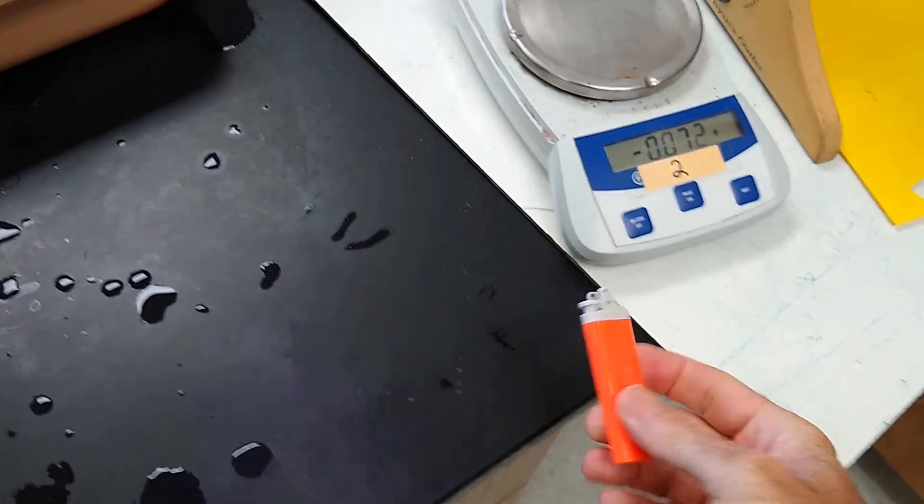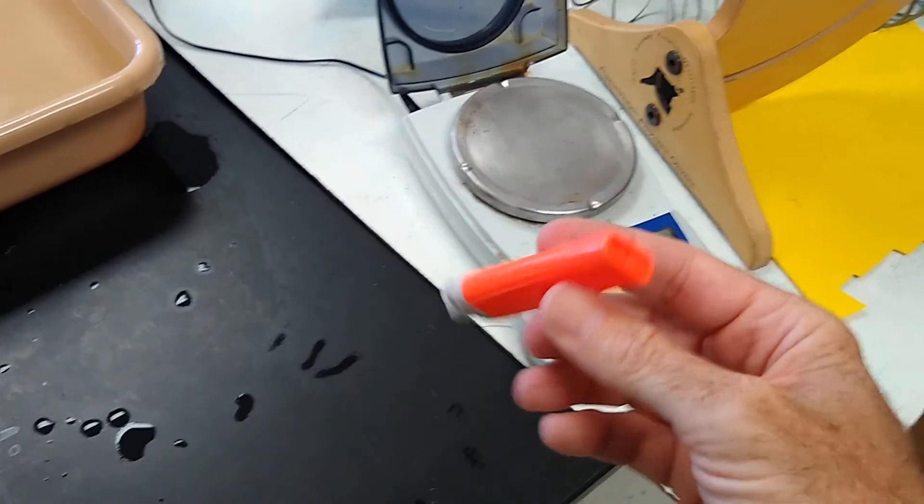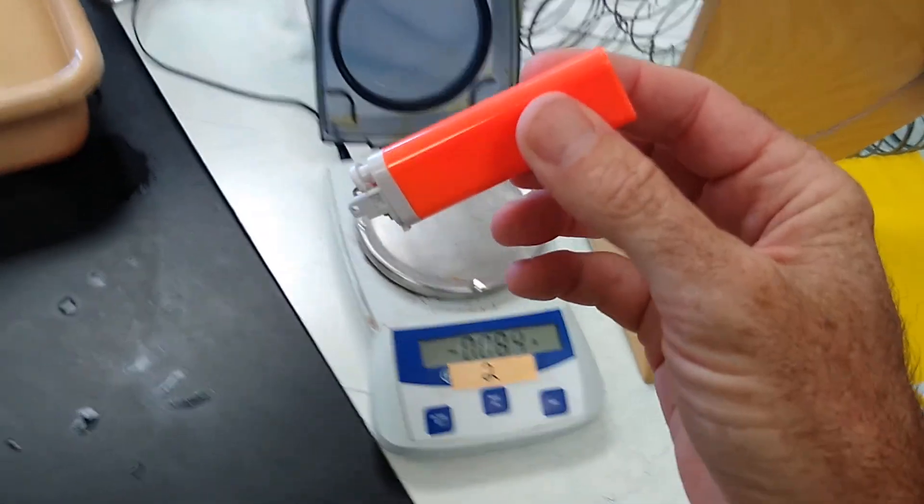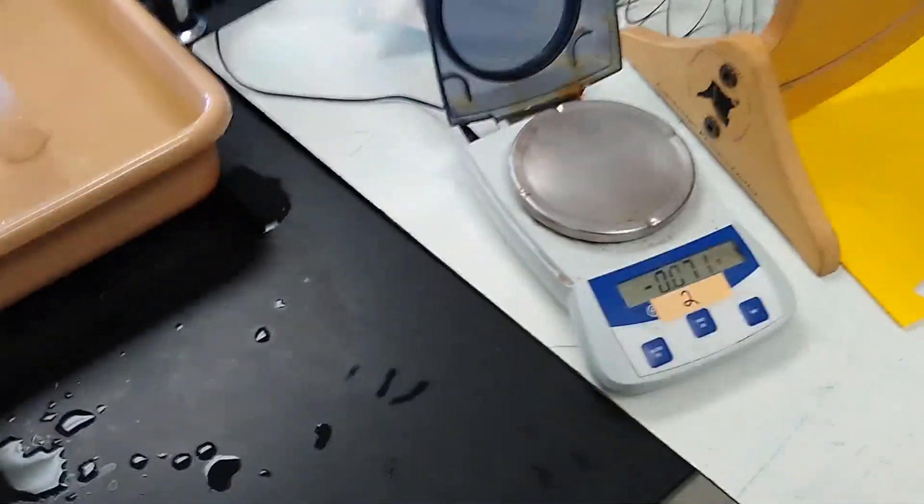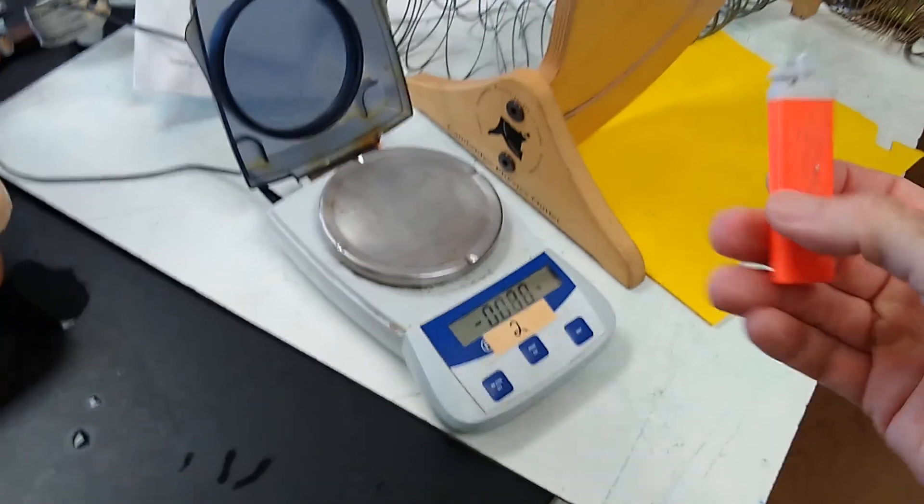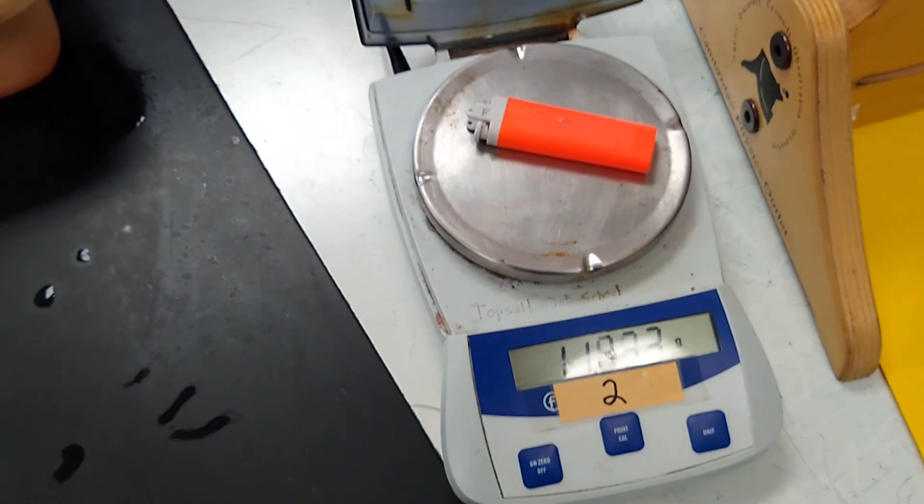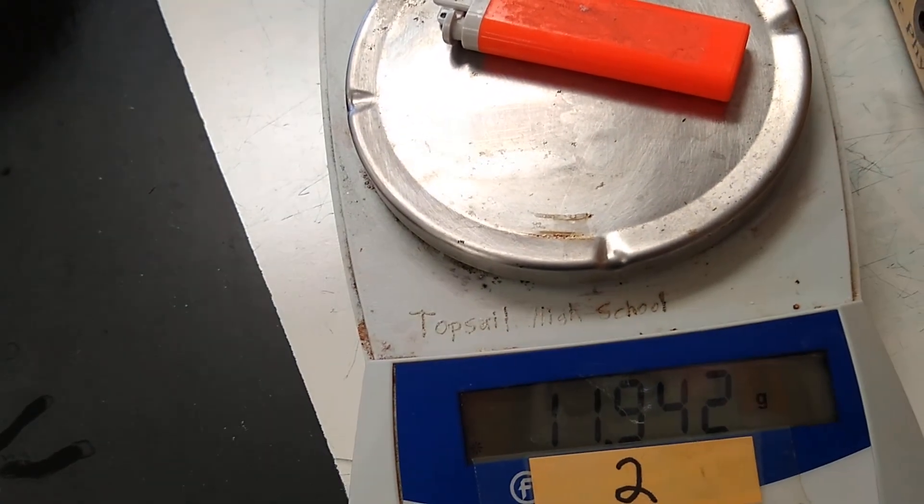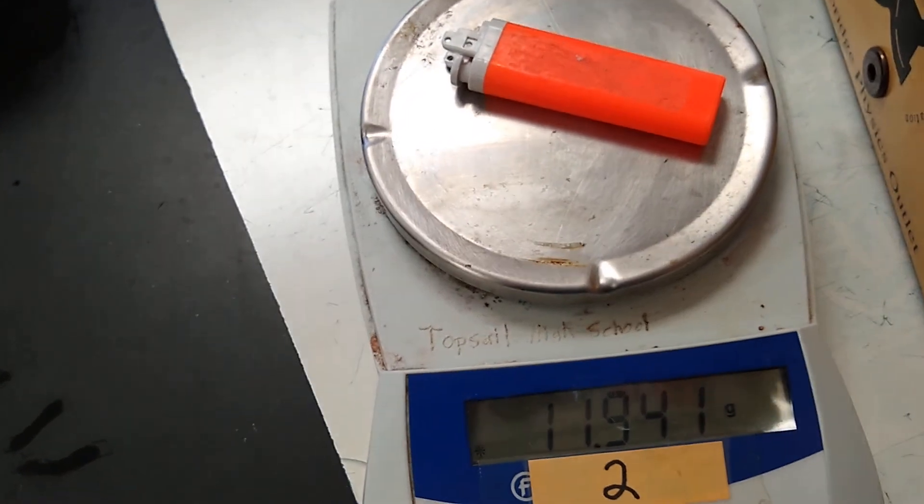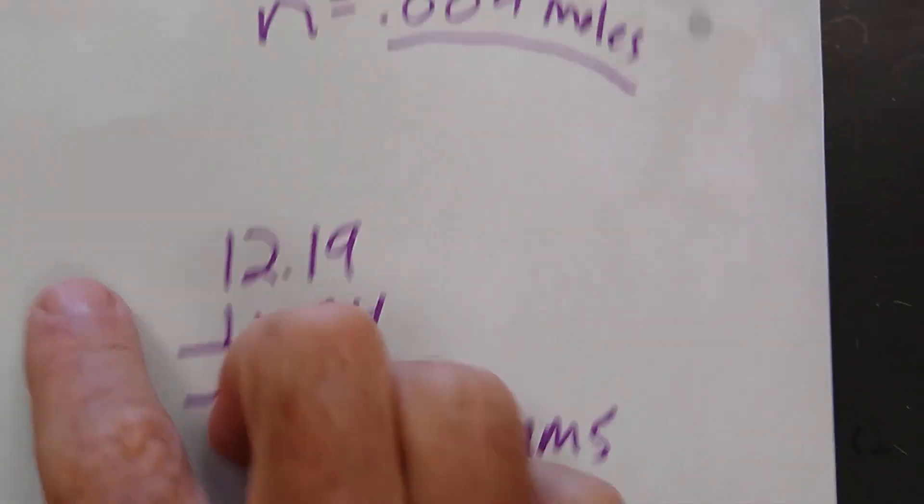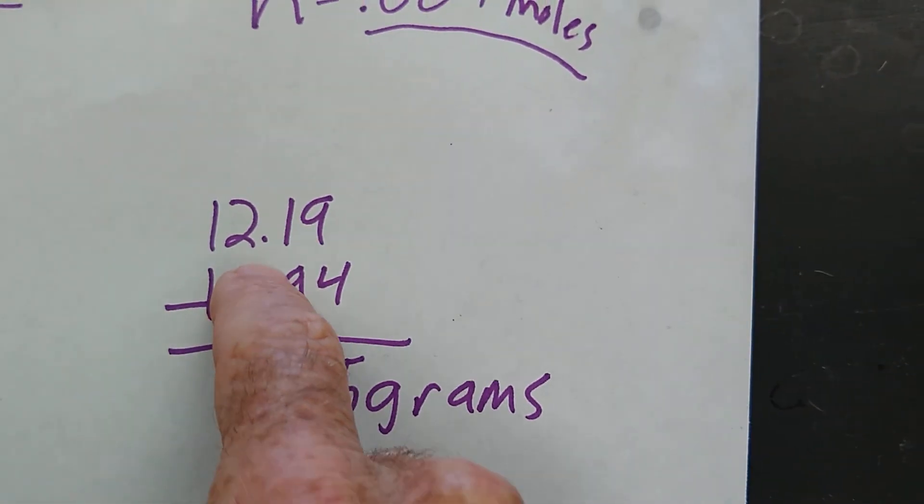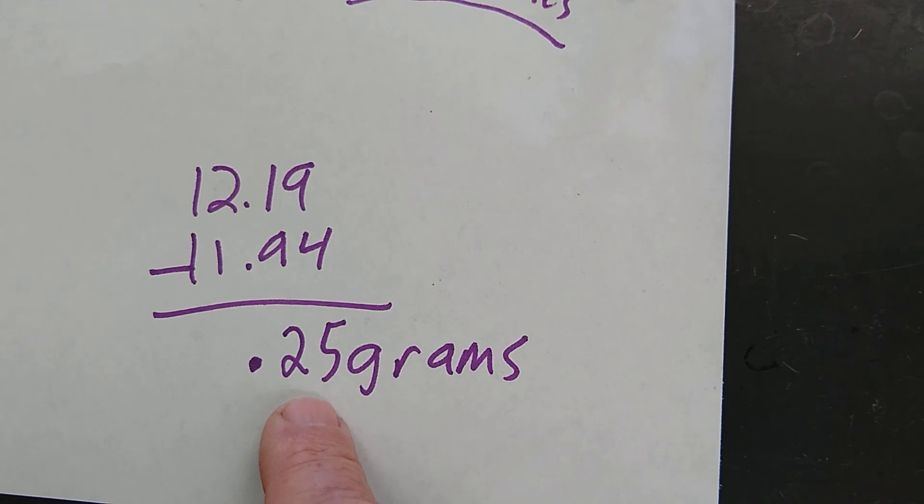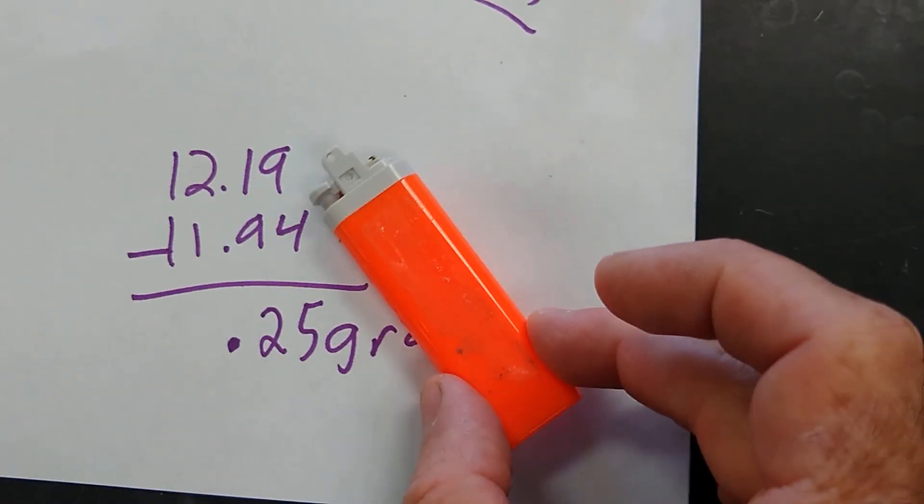Okay, I've dried the lighter. Literally using air, my shirt, tapping it on the desk, everything I can do to get this thing dry. And now we're going to re-weigh it. Let's do it. So the new weight is 11.942 or 11.94. Okay, so the lighter originally weighed 12.19 grams and now it weighs 11.94 grams.